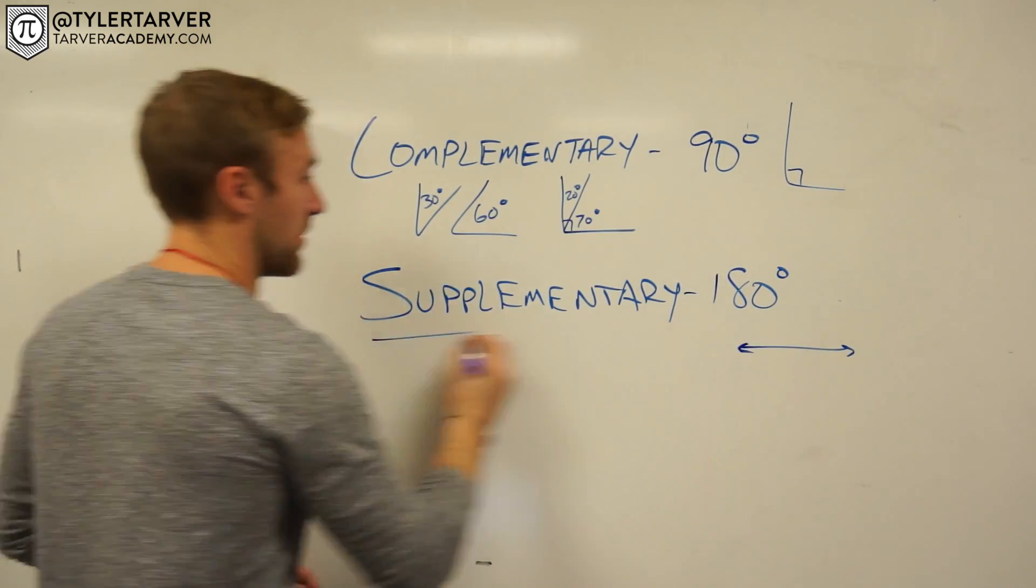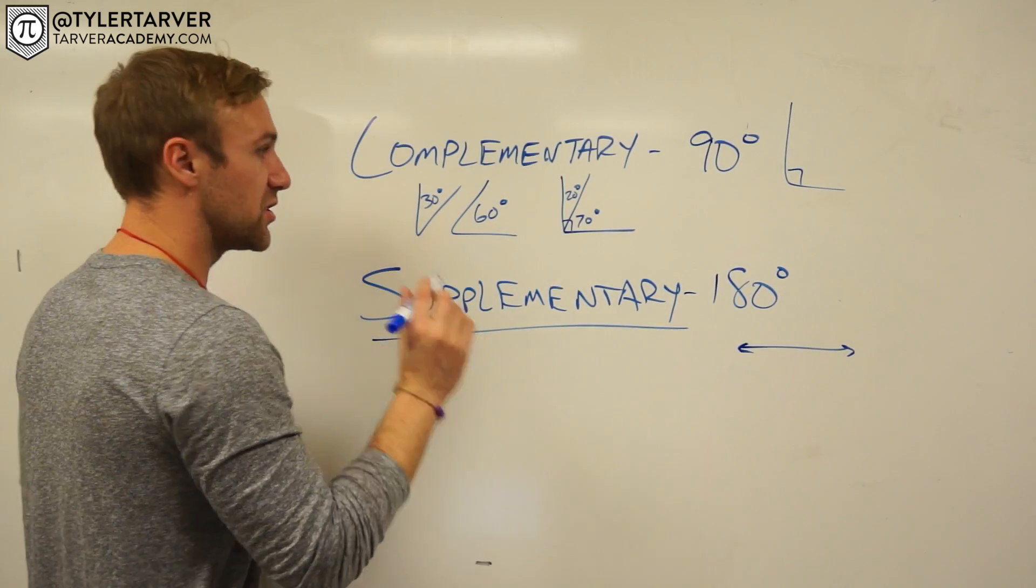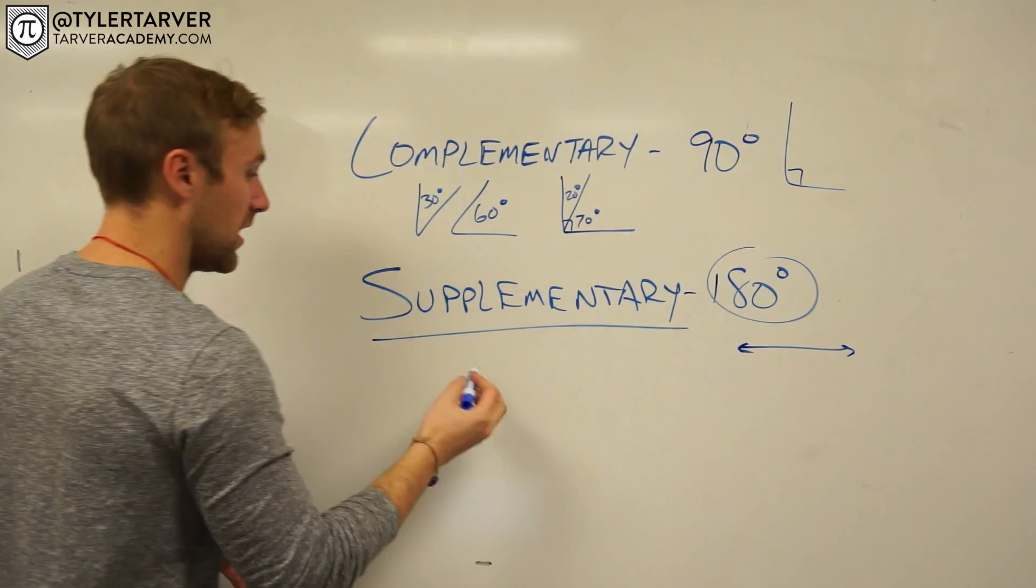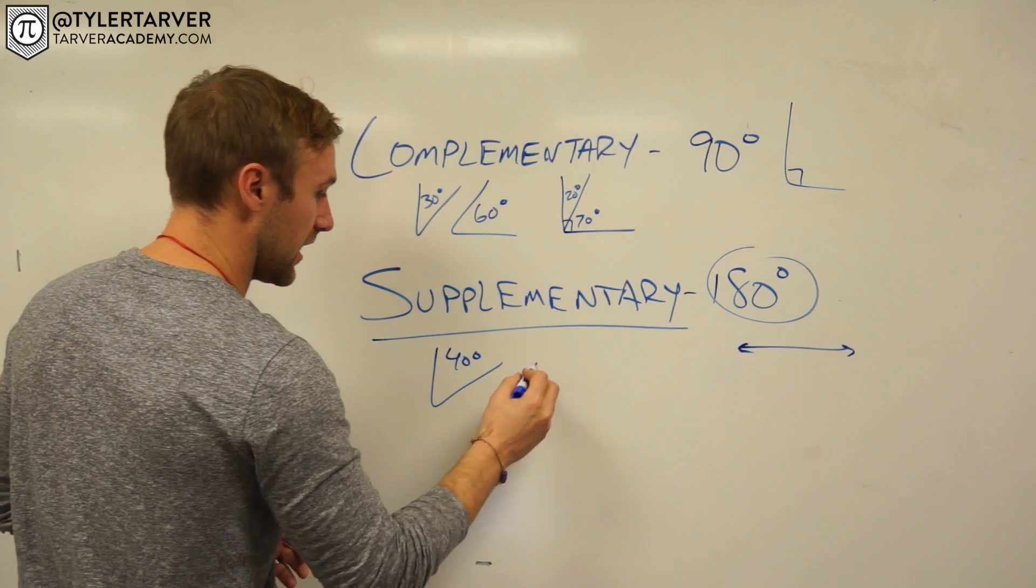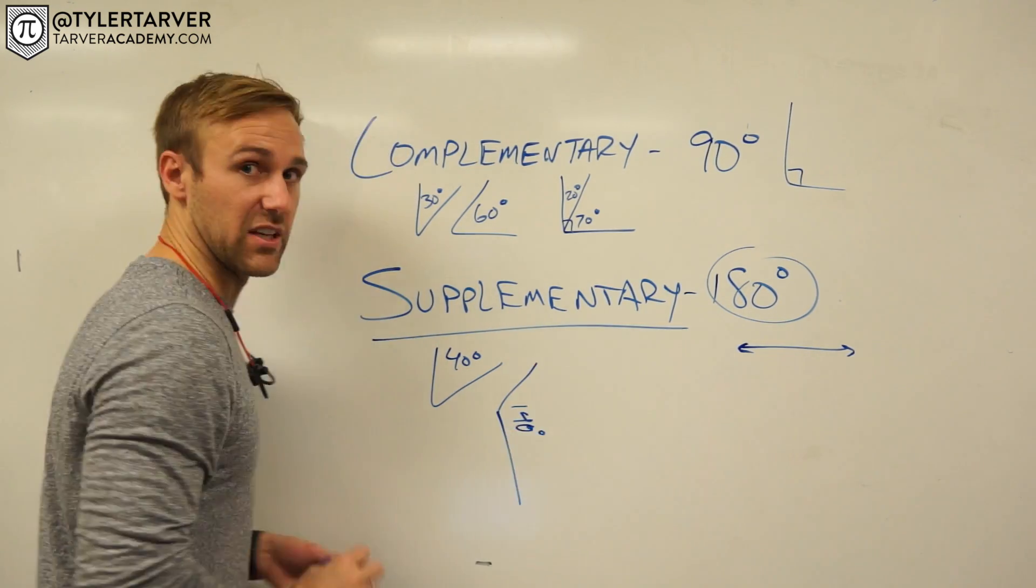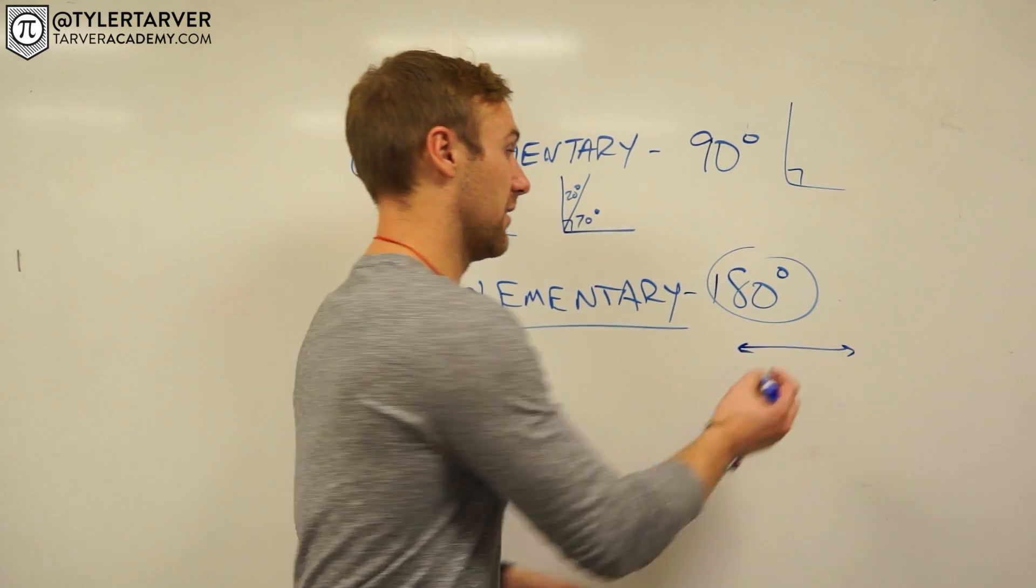Okay, so let's talk about supplementary. Supplementary is the exact same thing, except the two angles add up to 180. So like a 40 degree angle and a 140 degree angle. I had to draw it because I just kind of skimmed on it a little bit. Put those two together, it would make 180 degrees and make a straight line.